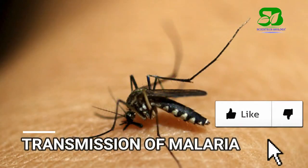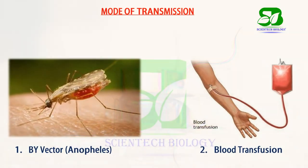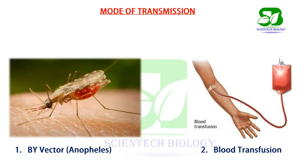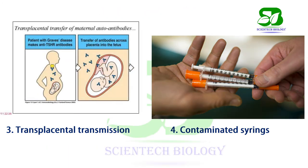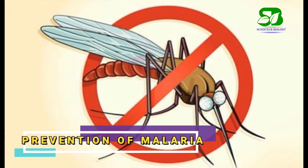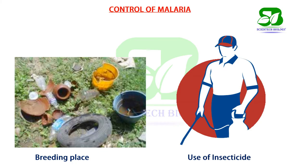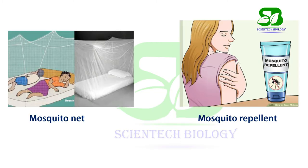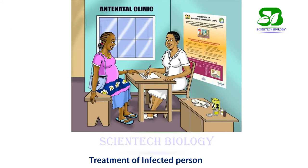Malaria is mainly transmitted by a vector like the Anopheles mosquito, but it may also be transmitted by blood transfusion, contaminated needles, and in some cases by the placenta. To control malaria, we should first control the vectors by destroying the breeding places of mosquitoes or by use of insecticides. By using mosquito nets or mosquito repellents, malaria can be controlled. Most importantly, the infected person should be treated with anti-malaria drugs.